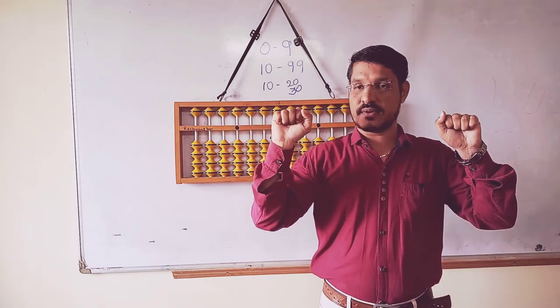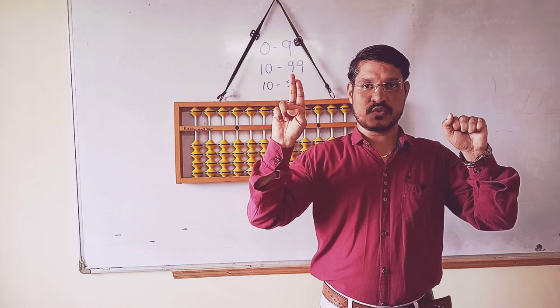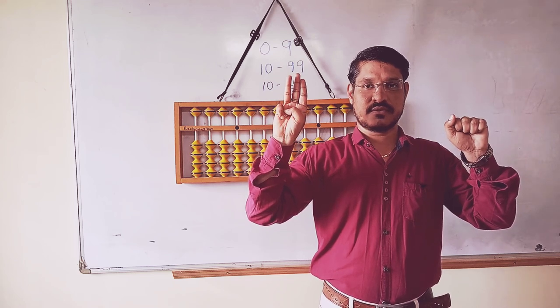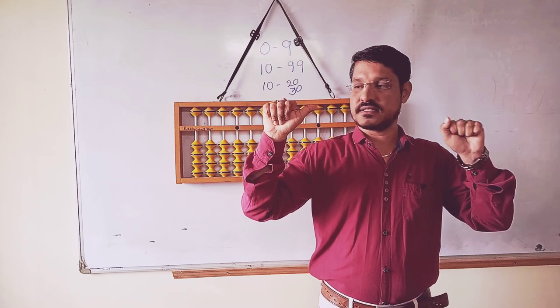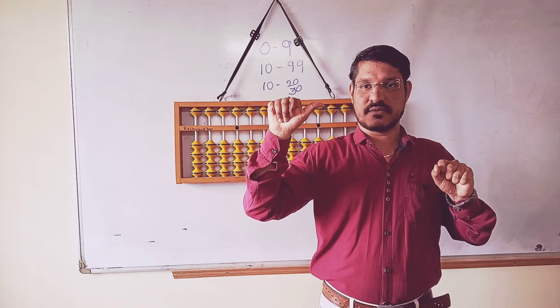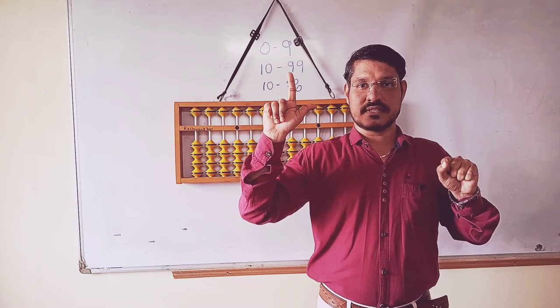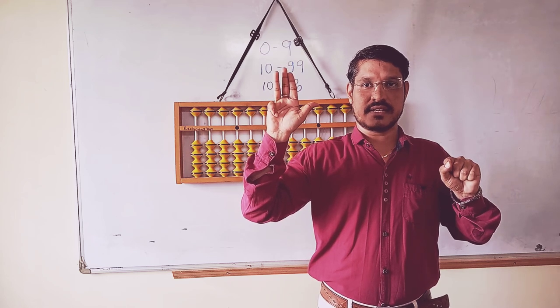This is 6. Like this, 5 plus 1, 6, 7, 8, 9. So once again we will restart. Close all fingers, open one, 1, 2, 3, 4. For 5, close all fingers and open only one thumb finger, that is the value of 5. And go once again, 6, 7, 8, 9.